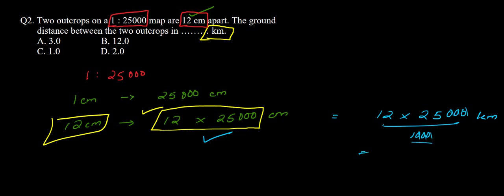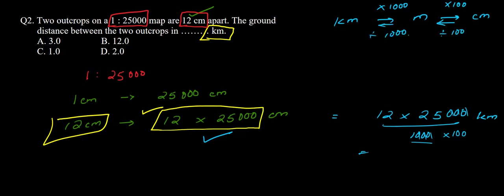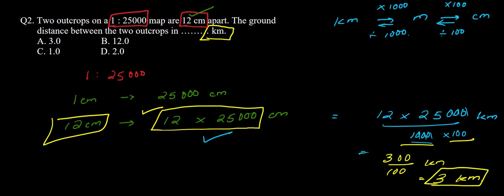From kilometers to meters we multiply by 1000, and from meters to centimeters we multiply by 100. So coming the other direction, we divide by 1000 and by 100. This gives us 300 ÷ 100 kilometers, which equals 3 kilometers. So the actual distance between the two outcrops is 3 kilometers.